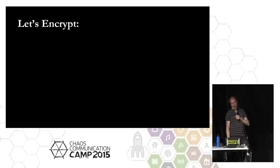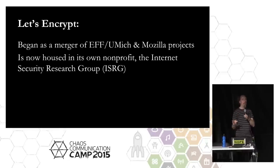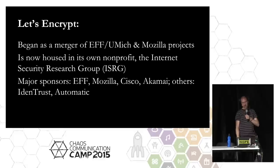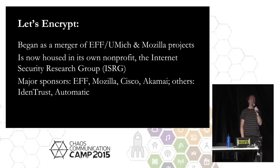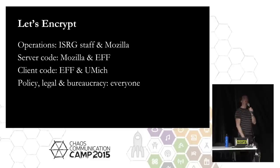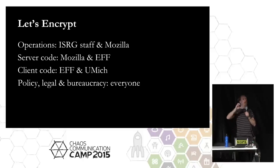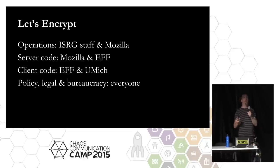So that's the plan. This project began as a merger of a project at EFF with the University of Michigan, merged with a similar project that had existed independently at Mozilla. It's now housed in a new non-profit called the Internet Security Research Group, or ISRG. It's being sponsored in addition to the original founders by Cisco, Akamai, Identrust, and Automattic — and there should be more sponsors in the works soon. The pieces are roughly broken down as follows: CA operations are being done by ISRG and Mozilla; the server-side codebase — the CA that decides whether to issue or not — is an EFF and Mozilla collaboration; the Python client that does the fancy configuration is EFF and University of Michigan. And everyone's been chipping in with the policy, legal, and bureaucracy stuff needed to become a CA, which is incredibly complex and labor-intensive.